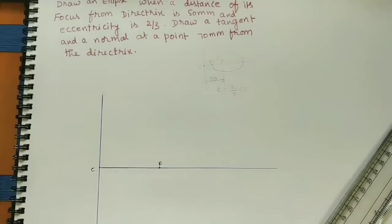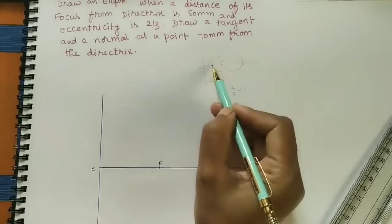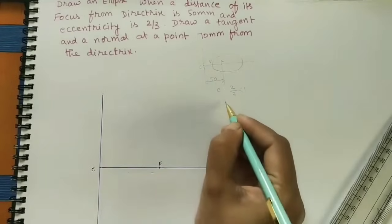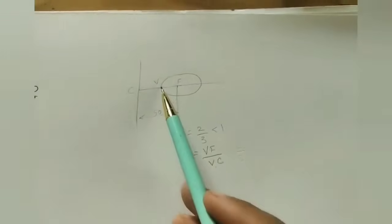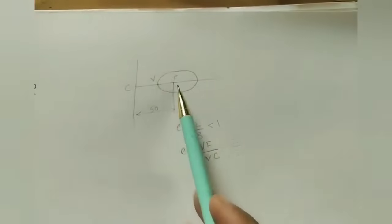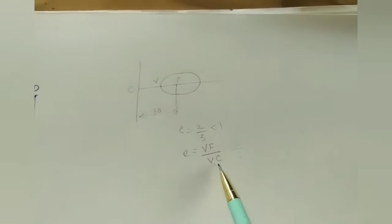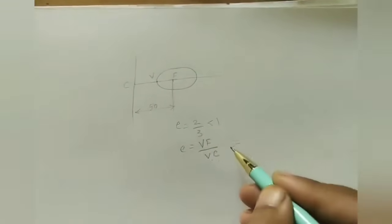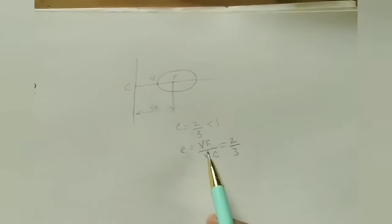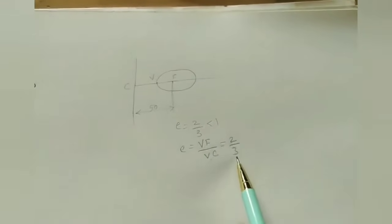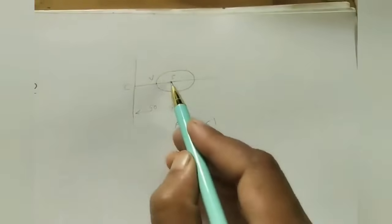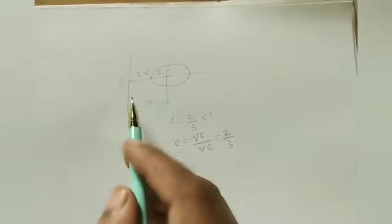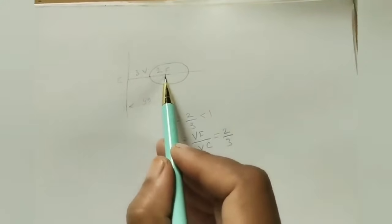Now, after marking F, mark the V point. How to mark V point between C and F? The eccentricity E is the ratio of VF (distance from point to focus) to VC (distance from point to directrix). This ratio is given as 2/3. That means VF is 2 parts and VC is 3 parts.